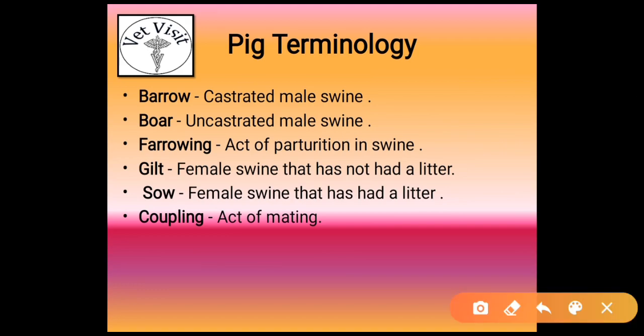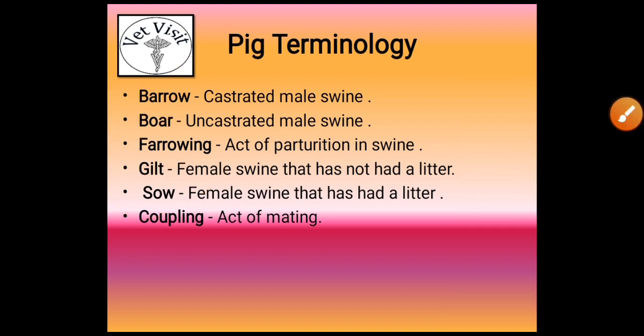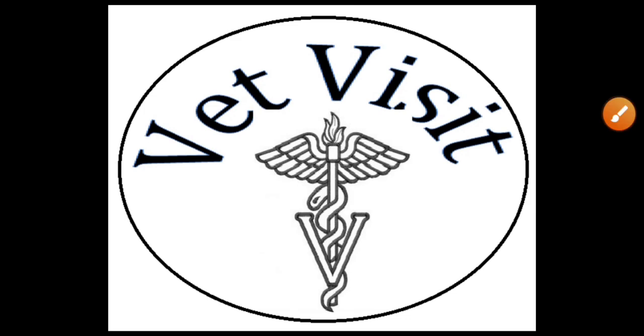A castrated male swine is known as barrow. Uncastrated male swine is known as boar. Act of parturition in swine is farrowing. A female swine that has not had a litter is known as gilt. A female swine that has had a litter is known as sow. Act of mating is coupling.